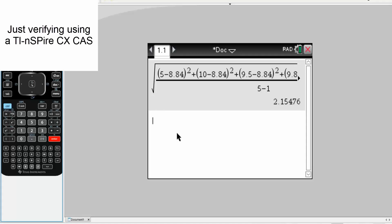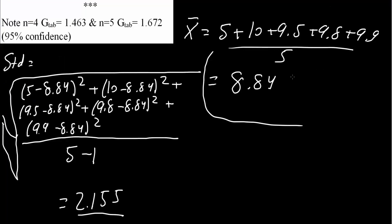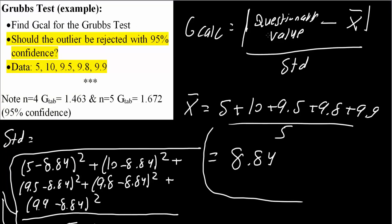We had the square root of all these numbers added up, divided by 5 minus 1, which is included in our square root, and got 2.155. Now we'll go back to the formula: absolute value of the questionable value, which is 5, minus the average, 8.84, divided by the standard deviation, 2.155.